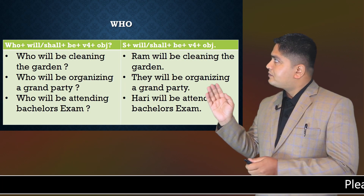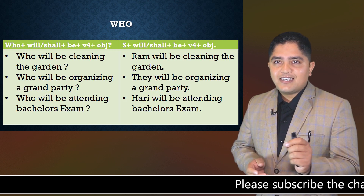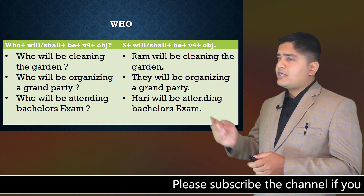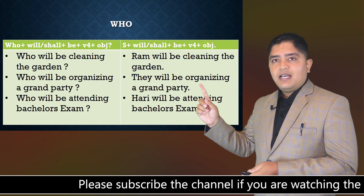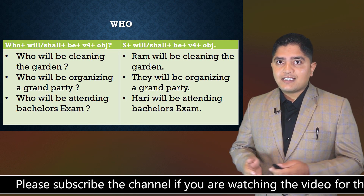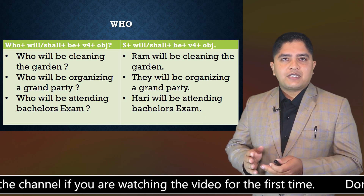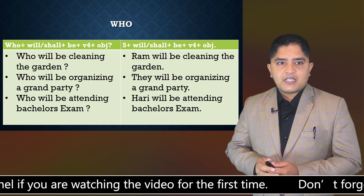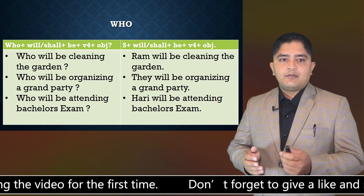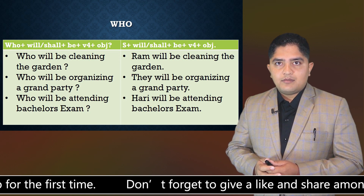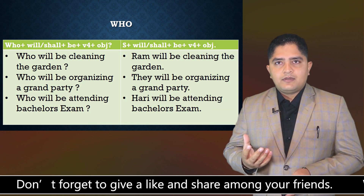Next is 'who.' When asking with 'who,' the subject remains in the question, and in the answer we provide the subject itself. Structure: Who + will/shall + be + verb(ing) + object? For example: 'Who will be cleaning the garden?' — 'Ram will be cleaning the garden.' 'Who will be organizing a grand party?' — 'They will be organizing a grand party.' 'Who will be attending bachelor's examination?' — 'Hari will be attending bachelor's examination.'